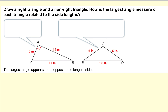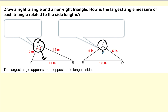Let's take a look at these two triangles. One triangle is a right triangle. In a right triangle, we know that angle A, the right angle, is the biggest angle in the triangle. We know the side opposite the right angle is the longest side. What happens if something is not a right triangle? It looks like this is the biggest angle — it's opening up the widest — and notice it's opposite the longest side.